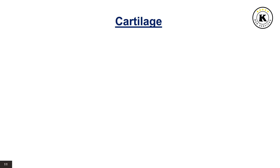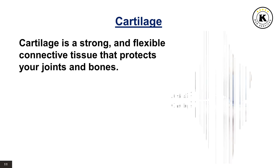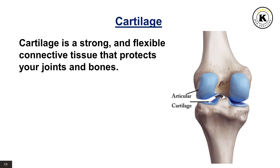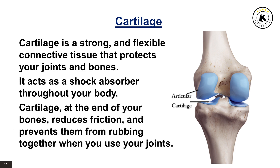Cartilage. Cartilage is a strong and flexible connective tissue that protects your joints and bones. It acts as a shock absorber throughout your body. Cartilage at the end of your bones reduces friction and prevents them from rubbing together when you use your joints.